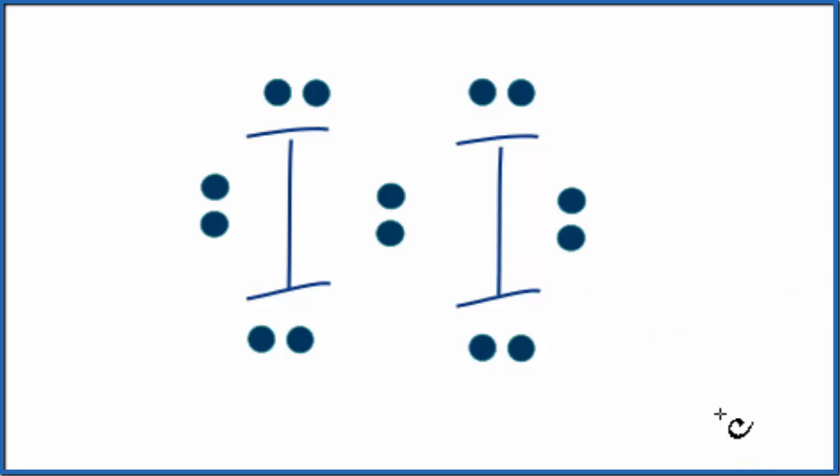So the first thing we need is a valid Lewis structure. This is the valid Lewis structure for I2. If you need help, there's a link in the description on how to do this Lewis structure.